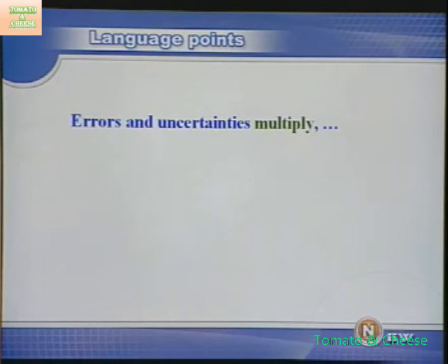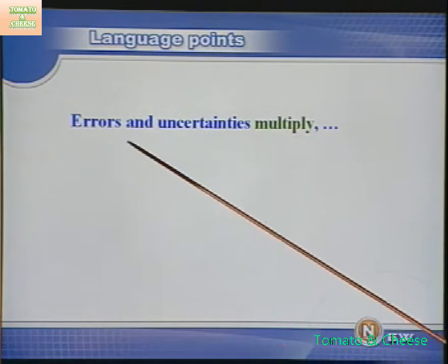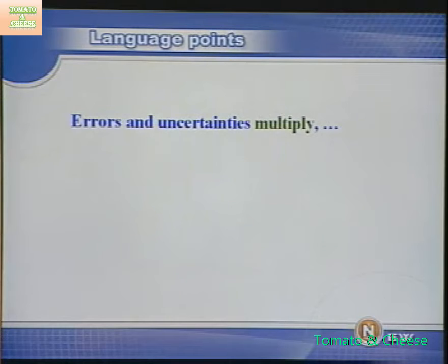下一个语言点：Errors and uncertainties multiply. "Multiply"意思是to increase by a large amount——成倍增加。Errors and uncertainties multiply，即错误和不可靠性成倍增加。这是因为气象预报员难以知道一些会引起巨大变化的小部分恶劣天气，所以往往出一些小错，而这些小错又使错误和不可靠性成倍地增加。